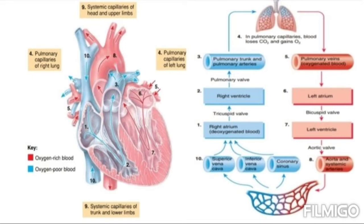In the postnatal period — that is, after birth — the heart pumps blood into two closed circuits with each heartbeat: the systemic circulation and the pulmonary circulation. These two circuits are arranged in series; the output of one becomes the input of the other, as would happen if you attached two garden hoses.